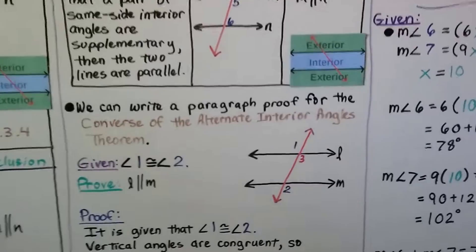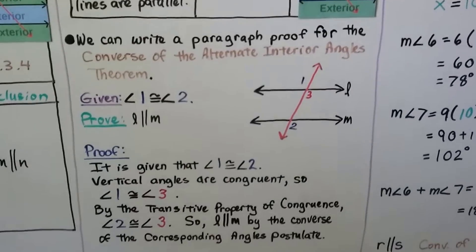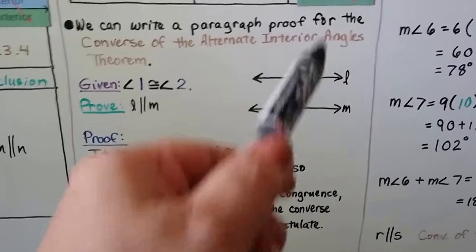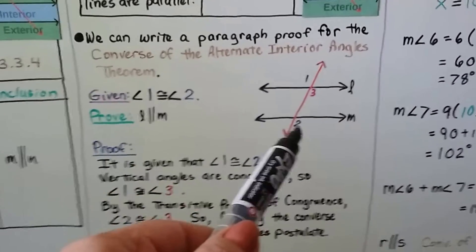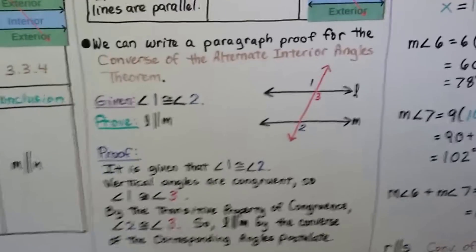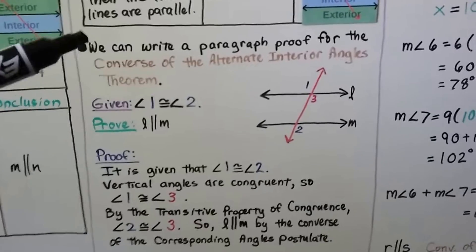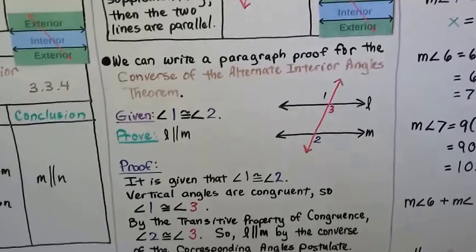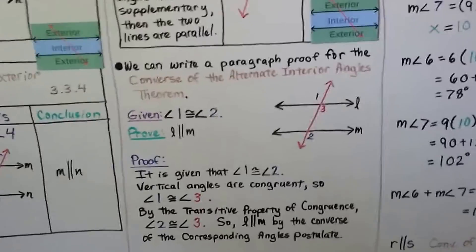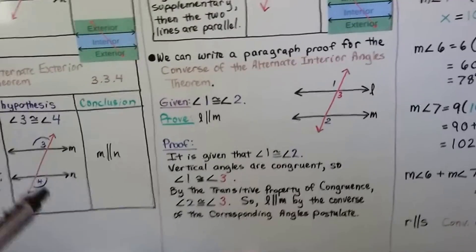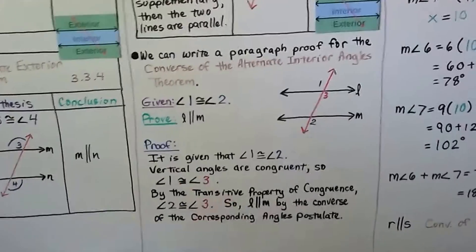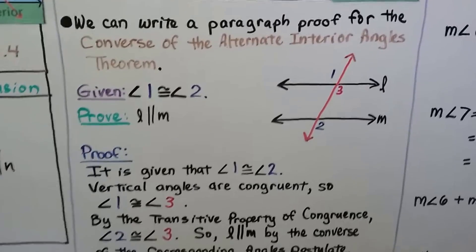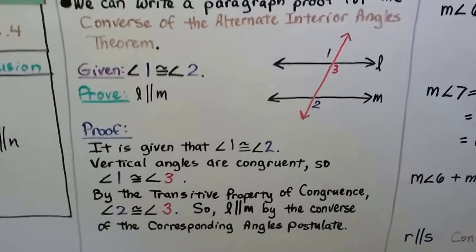We can write a paragraph proof for the converse of the alternate interior angles theorem. Take a look at the drawing — we can see the two lines and our transversal, with angles 1, 3, and 2. We're given that angle 1 and angle 2 are congruent — those two angles are alternate exterior angles. We need to prove that l is parallel to m.